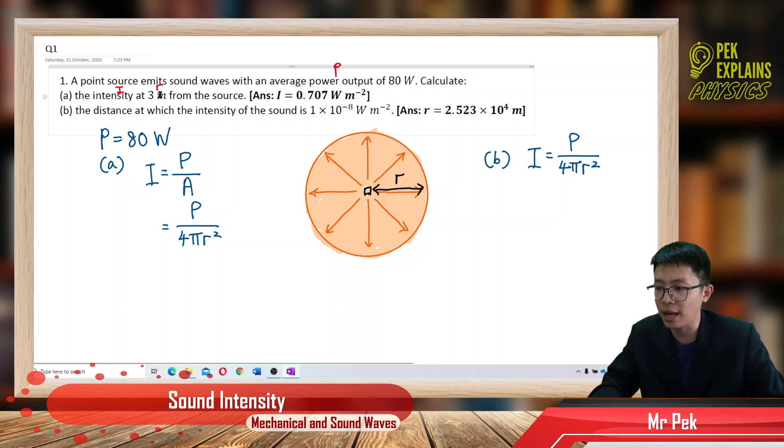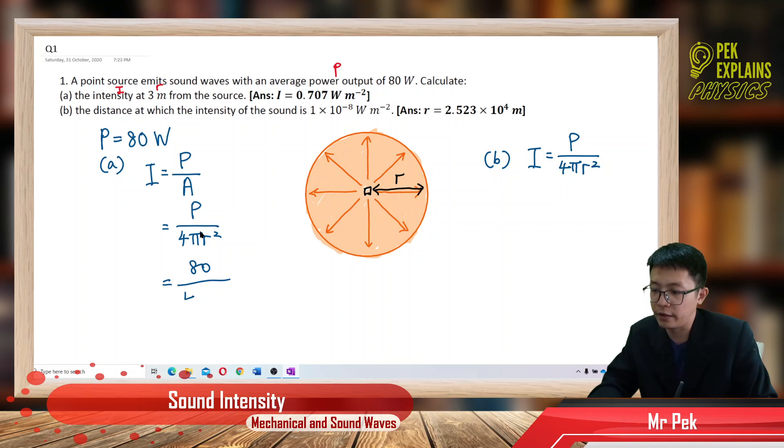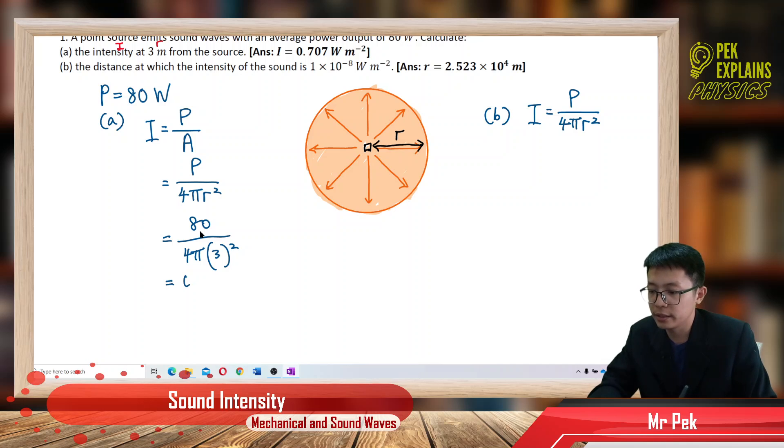Your distance R, 3 meter is over here. So, I can find the intensity easily. Power 80 Watt divided by 4 pi R. My R is 3 meter away. The further the distance, the lower the intensity actually. So, I get my answer 0.707.